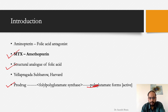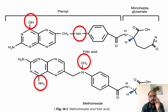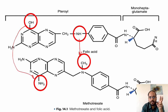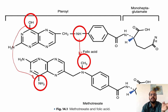Looking at the structural differences between folic acid and methotrexate, there are two key changes: an amine group is changed to a methyl group, and a hydroxyl group is changed to an amine group. These two changes allow methotrexate to attach to the enzyme DHFR (dihydrofolate reductase) and inhibit it, where folic acid would normally have attached.